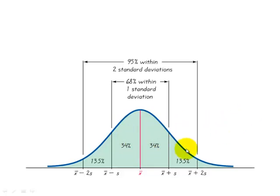Now if we go two standard deviations below the mean and two standard deviations above the mean, in this middle area here we expect it to contain 95% of the data.